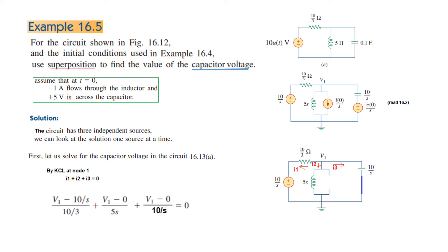Then i2 is v1 divided by 5s, and the third term is v1 divided by 10s, taking ground as zero. So the full KCL equation is: (v1 − 10/s)/(10/3) + v1/(5s) + v1/(10s) = 0.